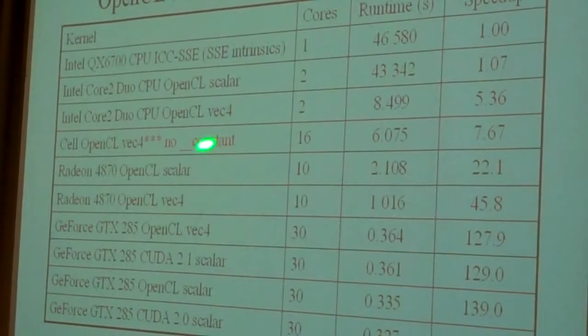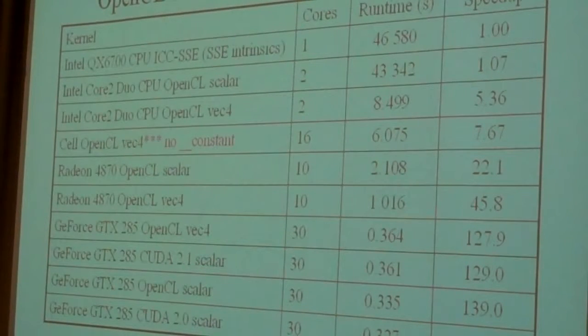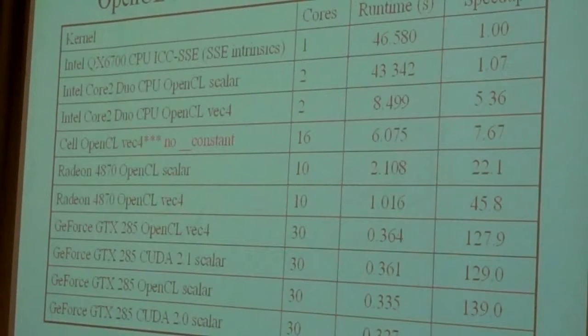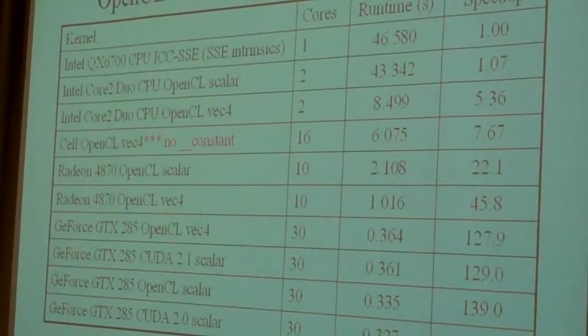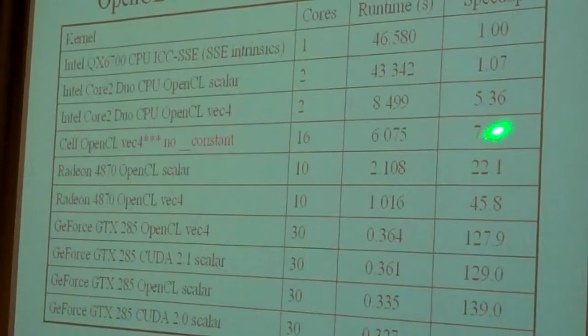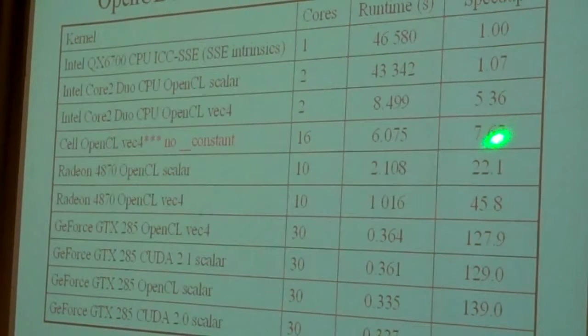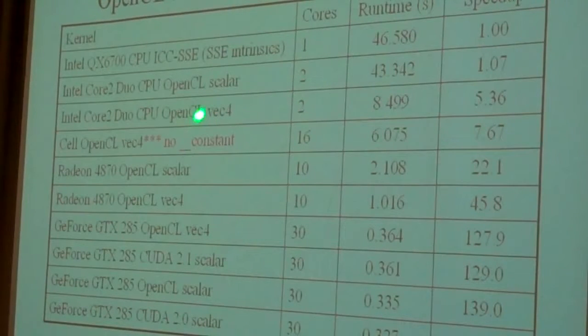And the cell, one thing to note about the cell processor, IBM's implementation of OpenCL from last year did not support the constant memory. And so this is effectively a kernel that's running out of the slow global memory as far as the cell is concerned. But even so, it gets a pretty respectable result relative to a much more recent Intel chip. That's pretty exciting.